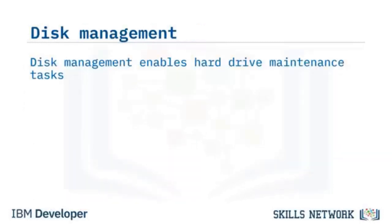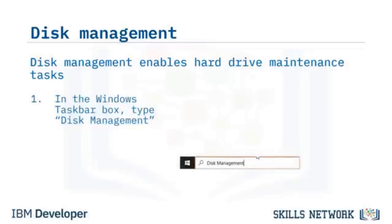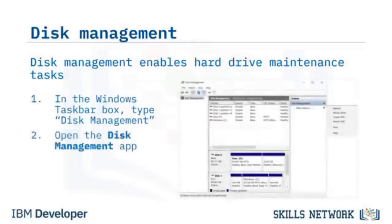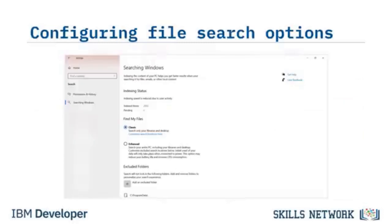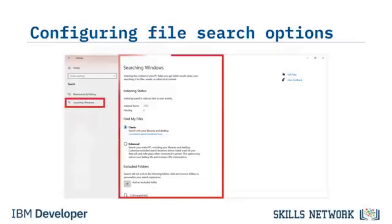Storage management capabilities include viewing storage usage on other drives, changing the storage destination, managing storage spaces, optimizing hard drives, and viewing data backup options. Disk management enables hard drive formatting and partitioning. In the Windows taskbar, type 'Disk Management' and open the Disk Management app to perform disk formatting, partitioning, compression, and cleanup. To see the rules for how files are indexed, within the Settings app select Search and select Searching Windows, where you can set rules for how users find files and which folders to exclude from searches.